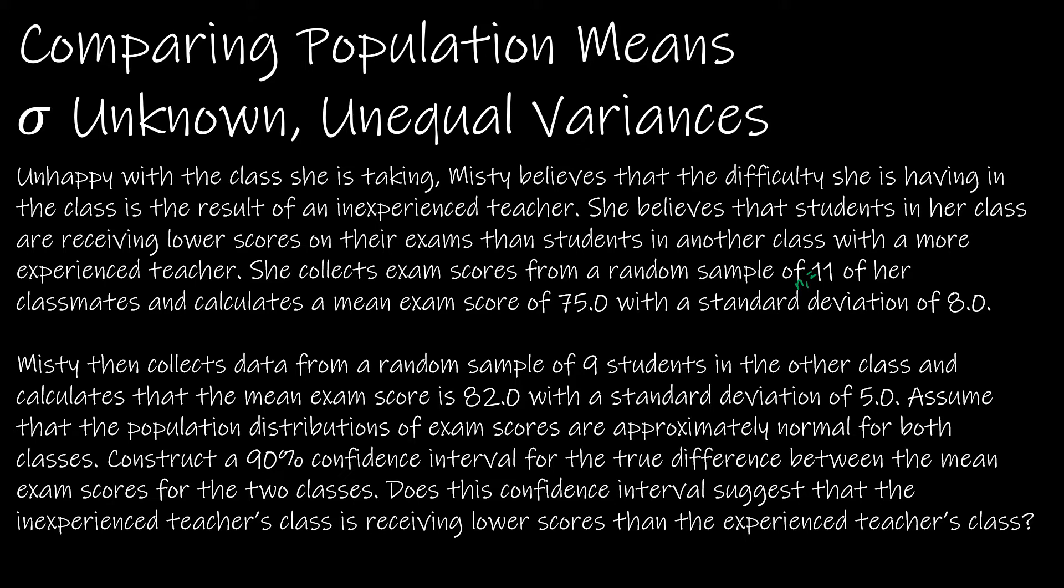She collects exam scores from a random sample of 11 of her classmates. So let's label that as n1. That's the number of observations. She calculates a mean score, so X bar one is 75 with a standard deviation—that's not sigma, that's S1 because it's of the sample—of 8.